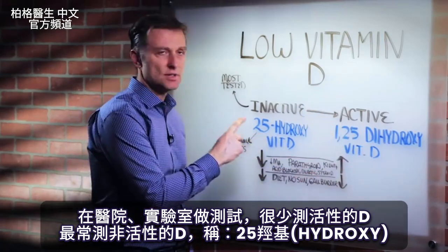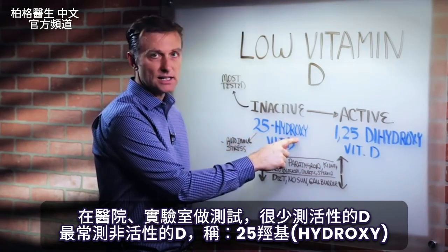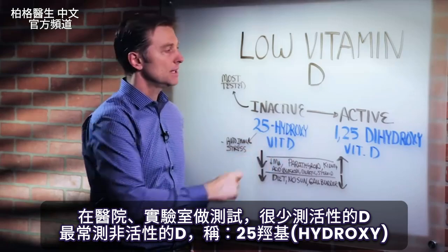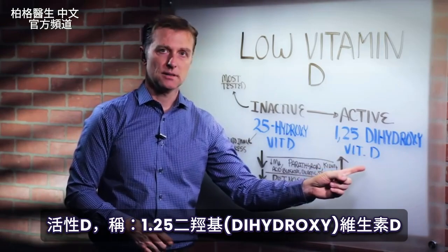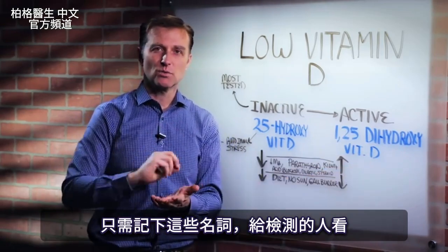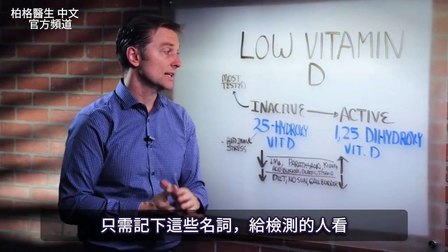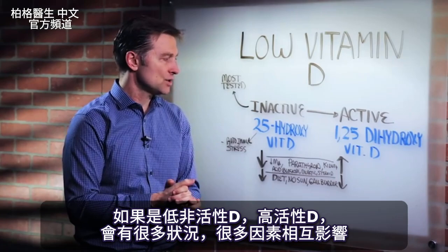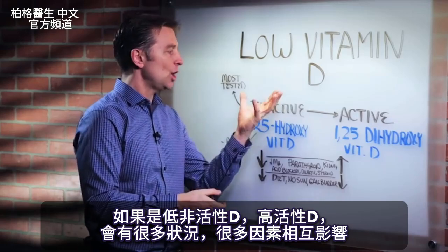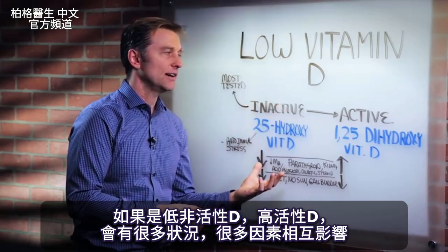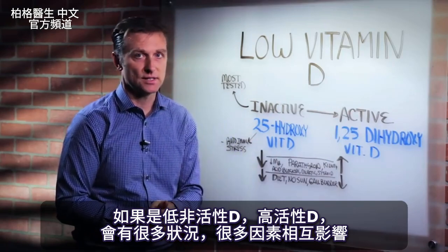The inactive type is the most commonly assessed and that's called 25-hydroxy vitamin D. The active is 1,25-dihydroxy vitamin D. Just make notes of those words and present them to your practitioner when you want to get testing, because there are several situations that can occur if you have low inactive vitamin D but high active vitamin D, because a lot of things can influence this.